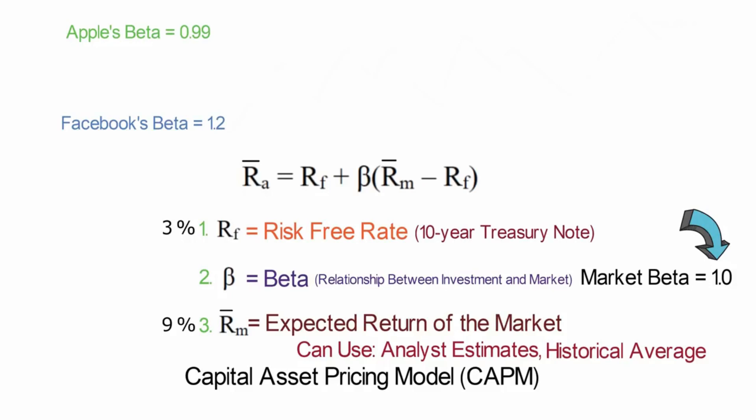So now we have all our inputs. Our risk-free rate is 3%. Beta for Apple is 0.99 and for Facebook, it's 1.2. And then we have the expected market return of 9%. So let's plug these numbers in.